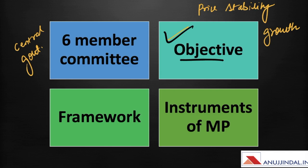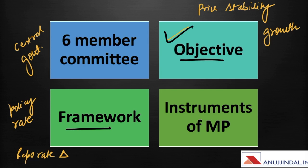The MPC framework aims at setting the policy rate — that is, the repo rate — based on assessment of the current and evolving macroeconomic situation, and modulation of liquidity conditions to anchor money market rates at or around the repo rate. Repo rate changes transmit through the money market to the entire financial system, which in turn influences aggregate demand — a key determinant of inflation and growth.